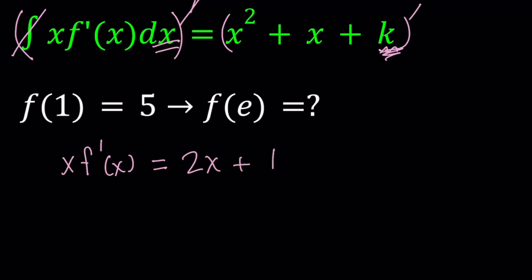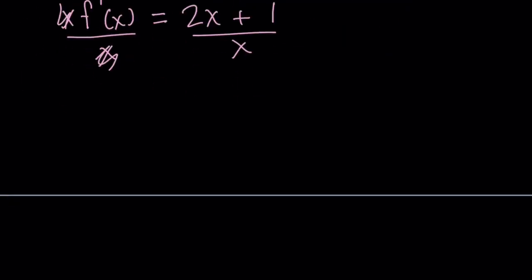Now we are trying to find f of x. So let's divide both sides by x to find f prime. From here, x cancels out and we end up with f prime of x equals 2 plus 1 over x. This is the derivative of f.